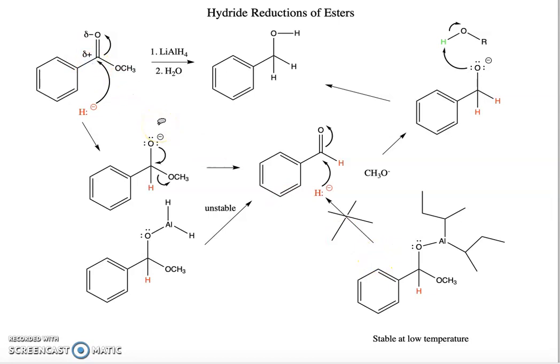So in terms of how we functionally do this, how do I get this to make an aldehyde for me, I run the reaction at low temperature, and then I add water or alcohol while it's still at low temperature.